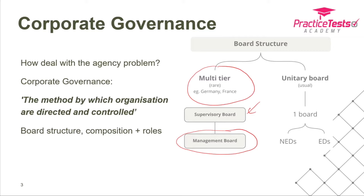The much more usual approach is to have a unitary board structure, which means the organisation has one board. On that board there are executive directors — people with operational responsibilities — and non-executive directors, people who are there purely to ensure that the business is being run on behalf of the shareholders. We're going to focus most of our attention on the unitary board because it is most common in the real world.